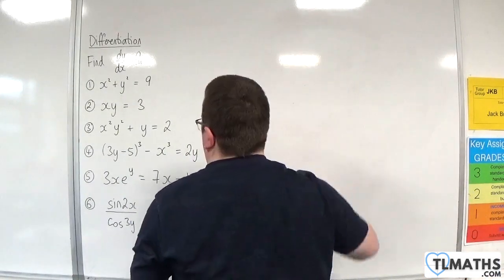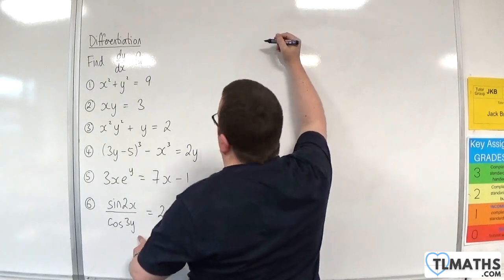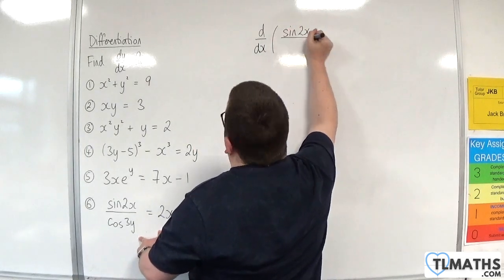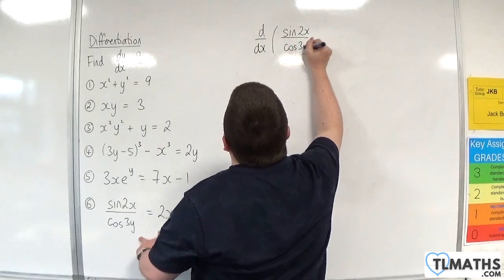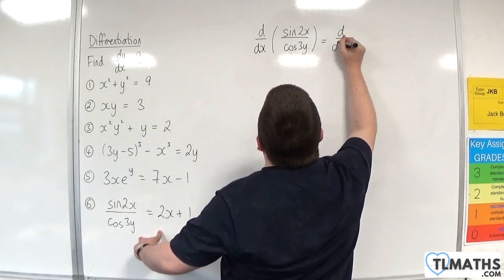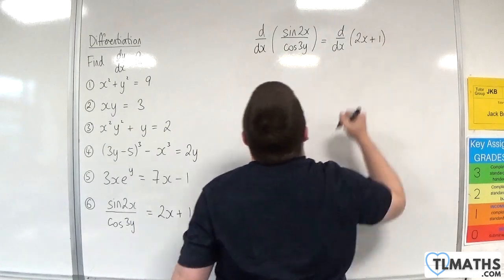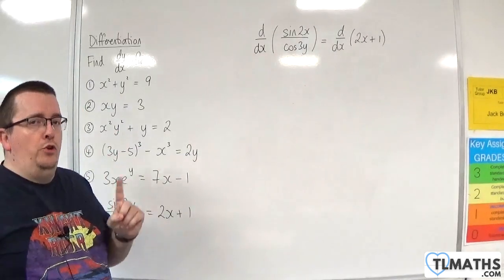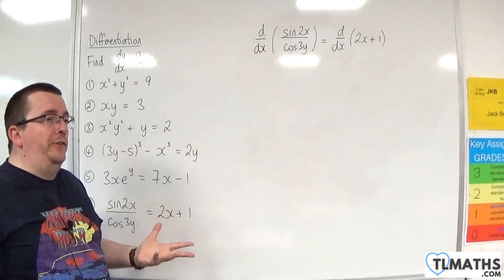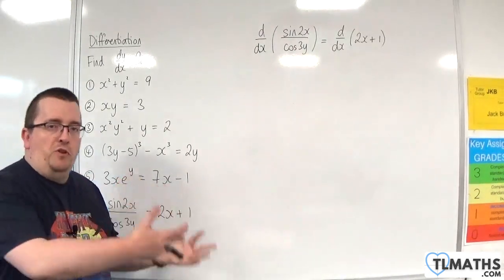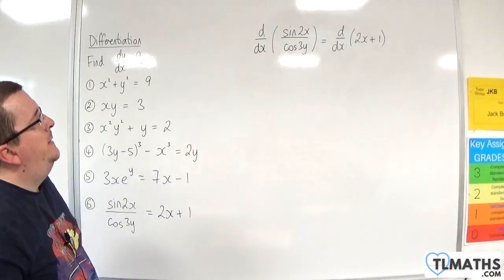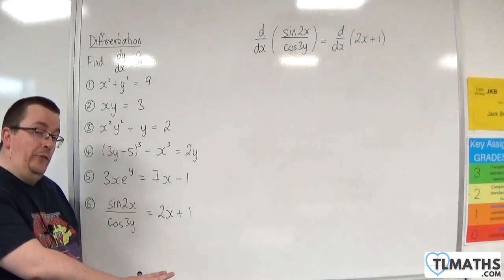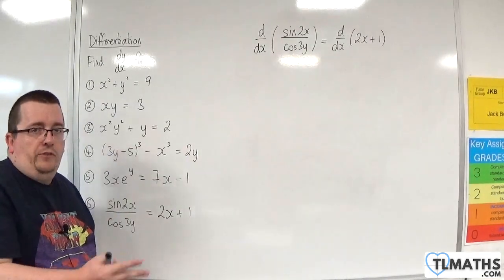Last one: d by dx of sine 2x over cosine 3y equals d by dx of 2x plus 1. There are alternatives — you could multiply both sides by cosine 3y first and then differentiate. I'm going to use the quotient rule for the left-hand side, just to get some practice with it since I've already used the product rule and chain rule.